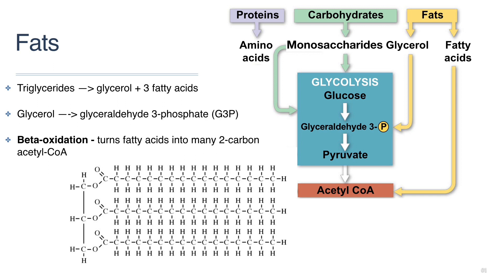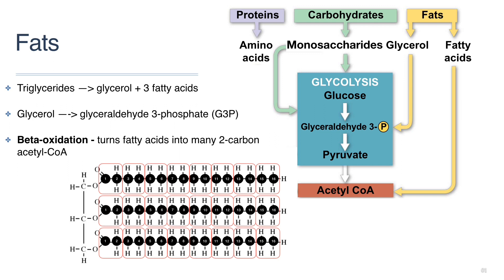The triglyceride depicted here, for example, is made up of three fatty acid chains that have 16 carbons each. This can be broken down into 24 separate molecules of acetyl-CoA, each of them able to enter the citric acid cycle.